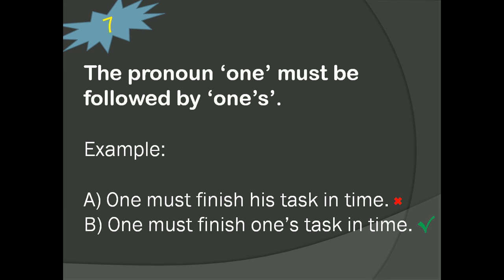Look at the seventh trick. The pronoun one must be followed by one's. For example, one must finish his task in time. This is wrong. What would be the correct? One must finish one's task in time. If you are using one as a pronoun, it must be followed by one's.